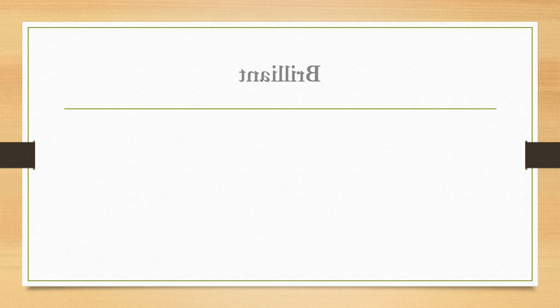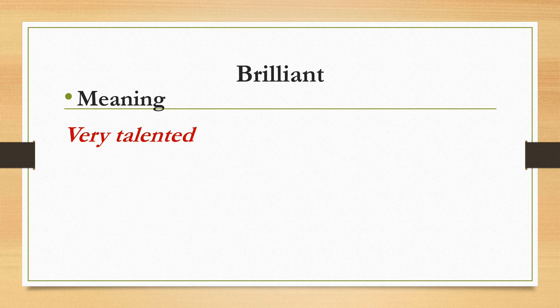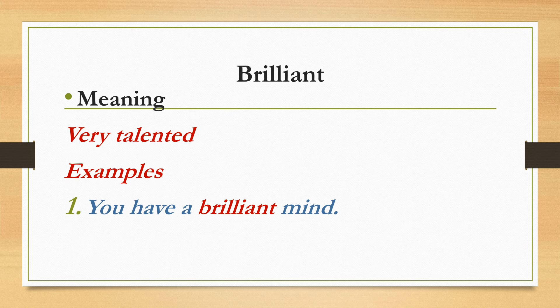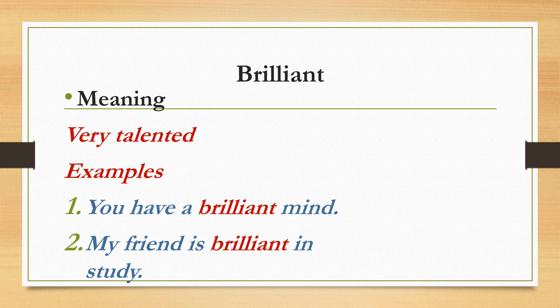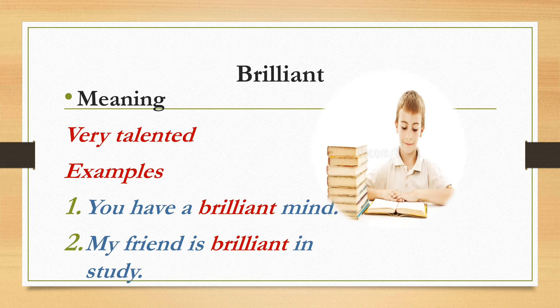The next word is brilliant, and it means very talented. For a person who is very talented, we can use the word brilliant. For example, you have a brilliant mind, meaning you are very talented and your mind is very sharp. My friend is brilliant in study, meaning my friend is very talented in studies.